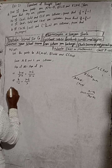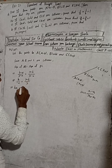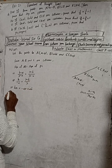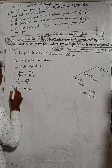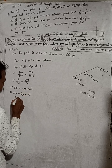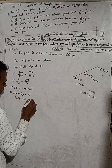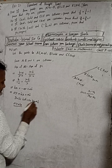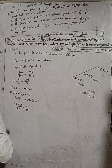Now cross multiply: b times x = negative a times (y - b), which gives bx = -ay + ab. Rearranging: ay + bx = ab. Now divide both sides by ab.